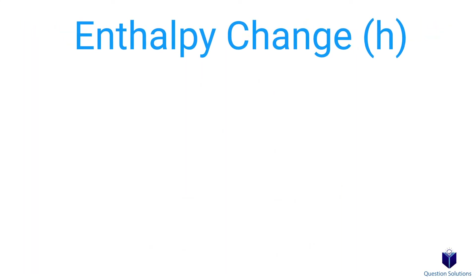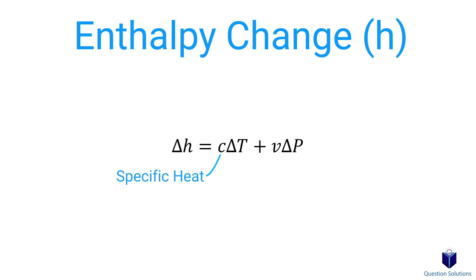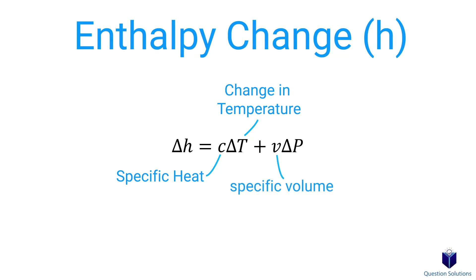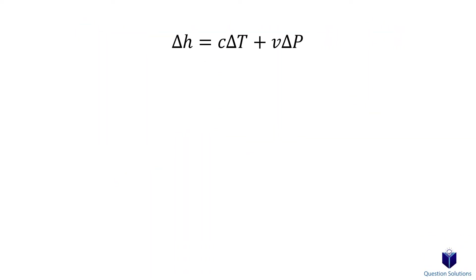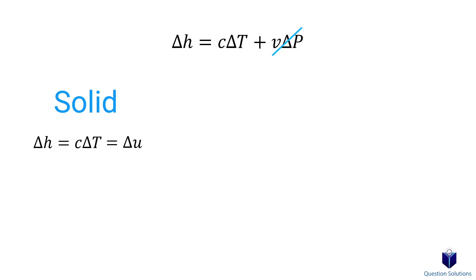To find the change in enthalpy when it comes to incompressible substances, we can use this equation. This is specific heat, this is the change in temperature, this is the specific volume, and this is the change in pressure. This equation is actually dependent on whether the substance is a solid or a liquid. If the substance is a solid, then the specific volume times delta pressure term is negligible, so we end up with an expression that is also equal to the internal energy change.